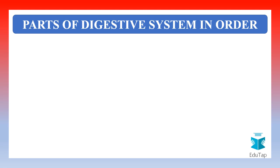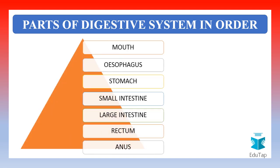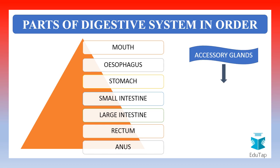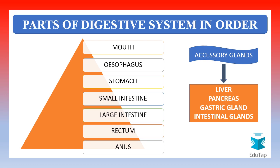The different parts of the digestive system can be listed as mouth, esophagus, stomach, small intestine, large intestine, rectum and anus. These parts have been listed in the order in which the food passes through them. Apart from these parts, we have certain accessory glands that help in the digestion of food. They are the liver, pancreas, gastric glands found in the walls of stomach, and intestinal glands found in the walls of small intestine.